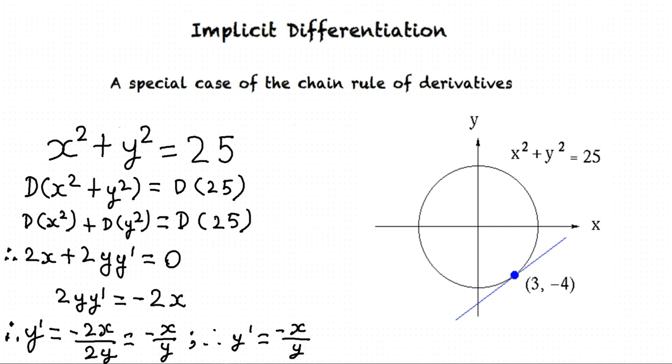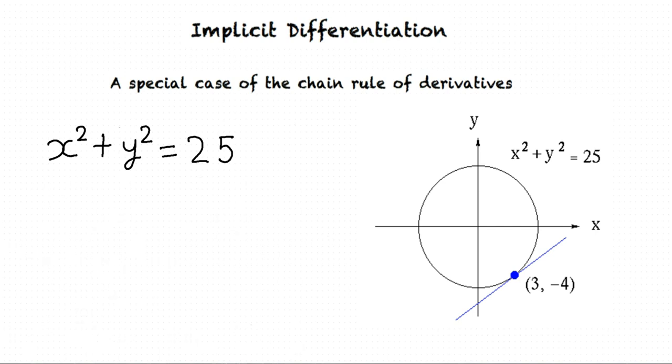Therefore, y prime equals minus x over y. Thus, the slope of the line tangent to the graph at the point 3, minus 4 is m equals y prime equals minus 3 over minus 4 equals 3 over 4.